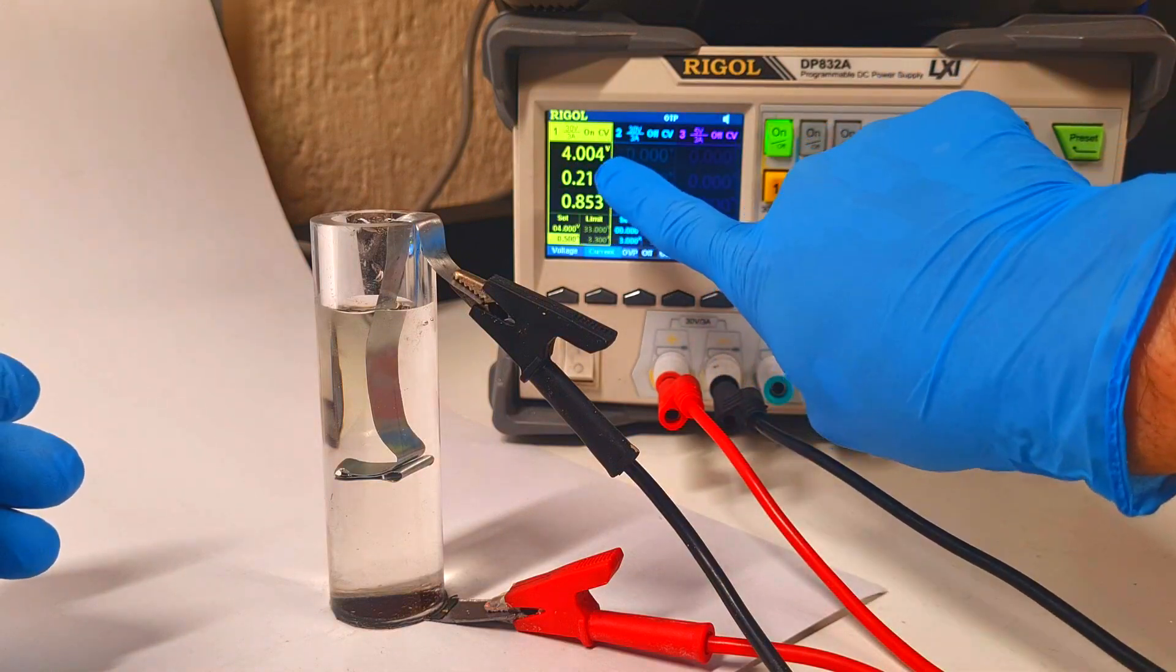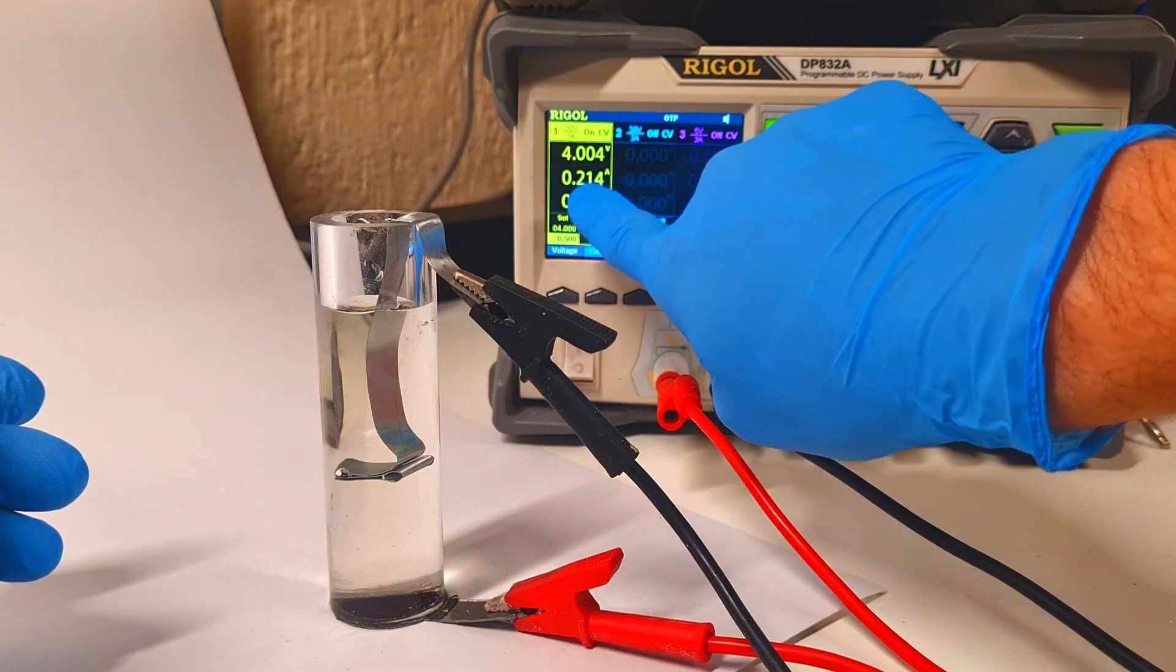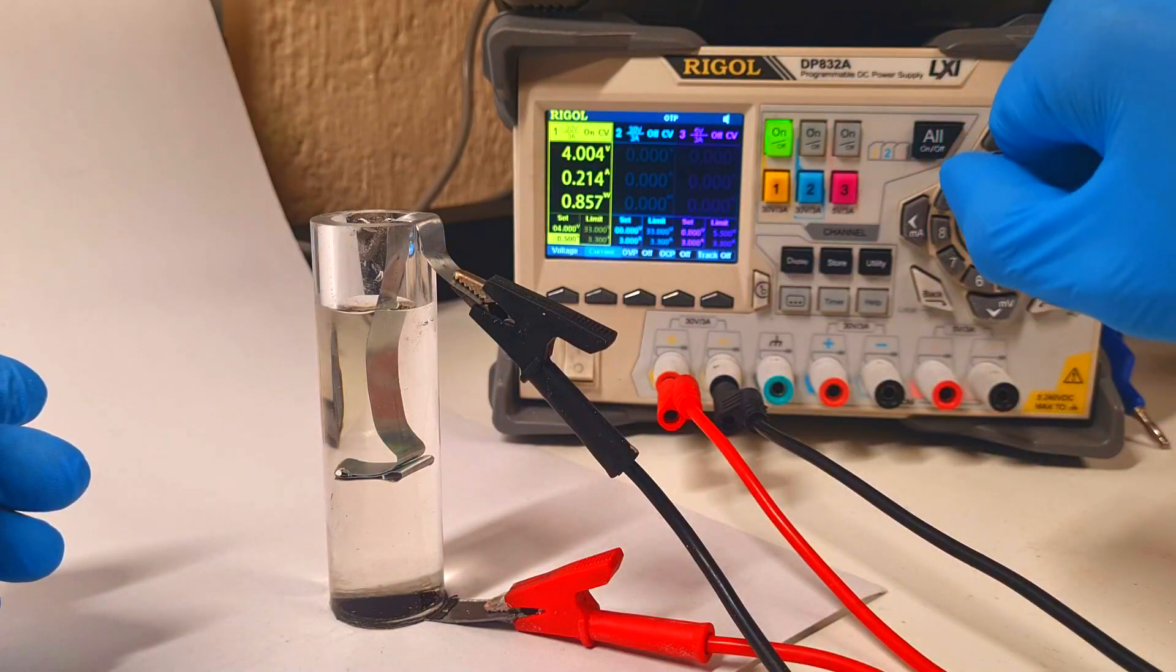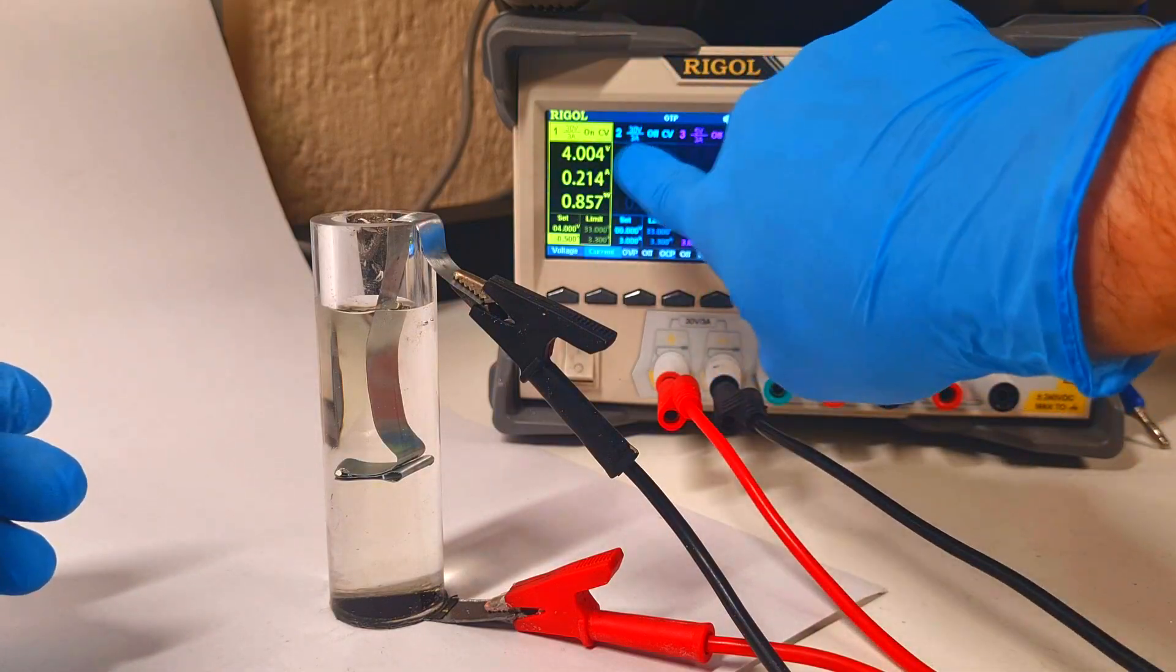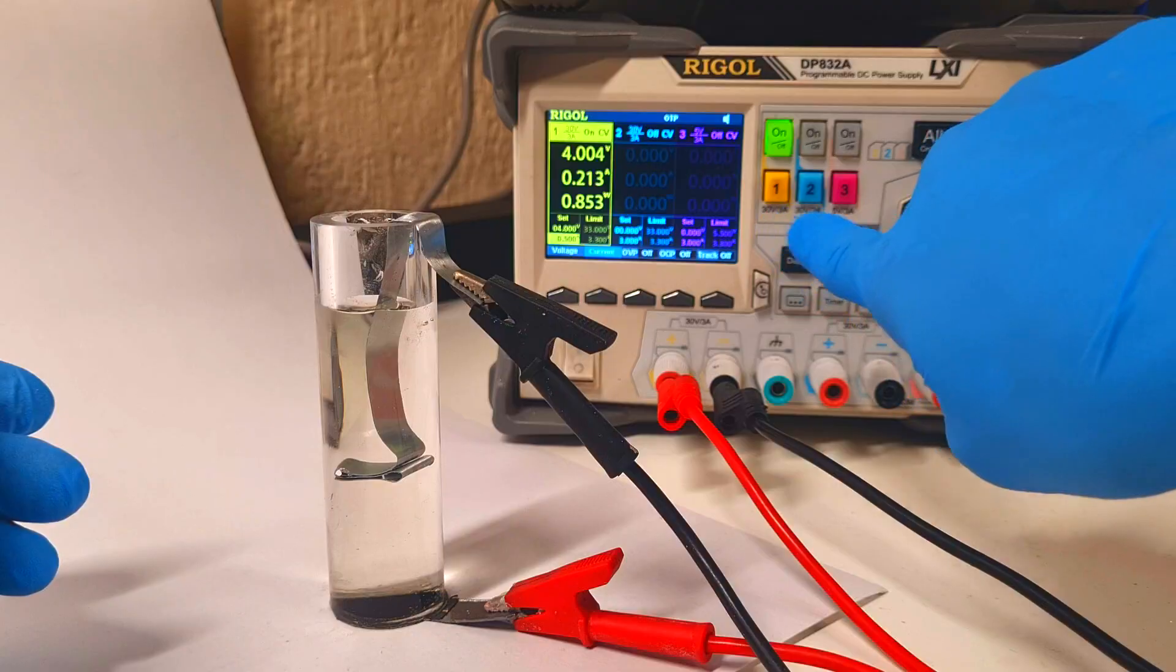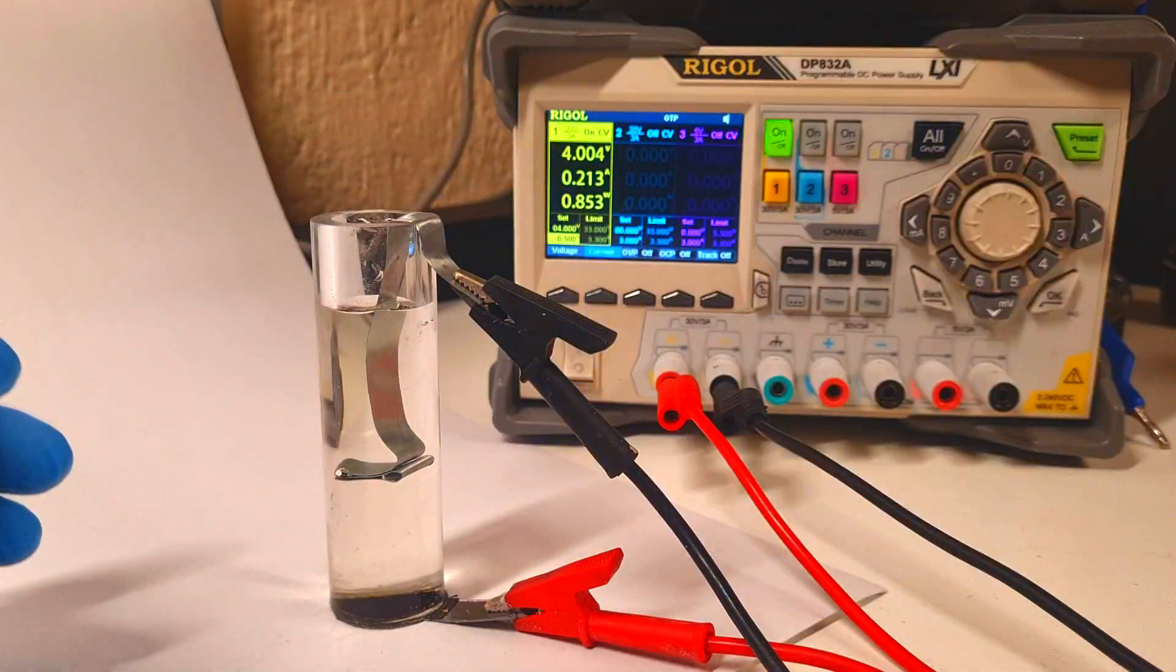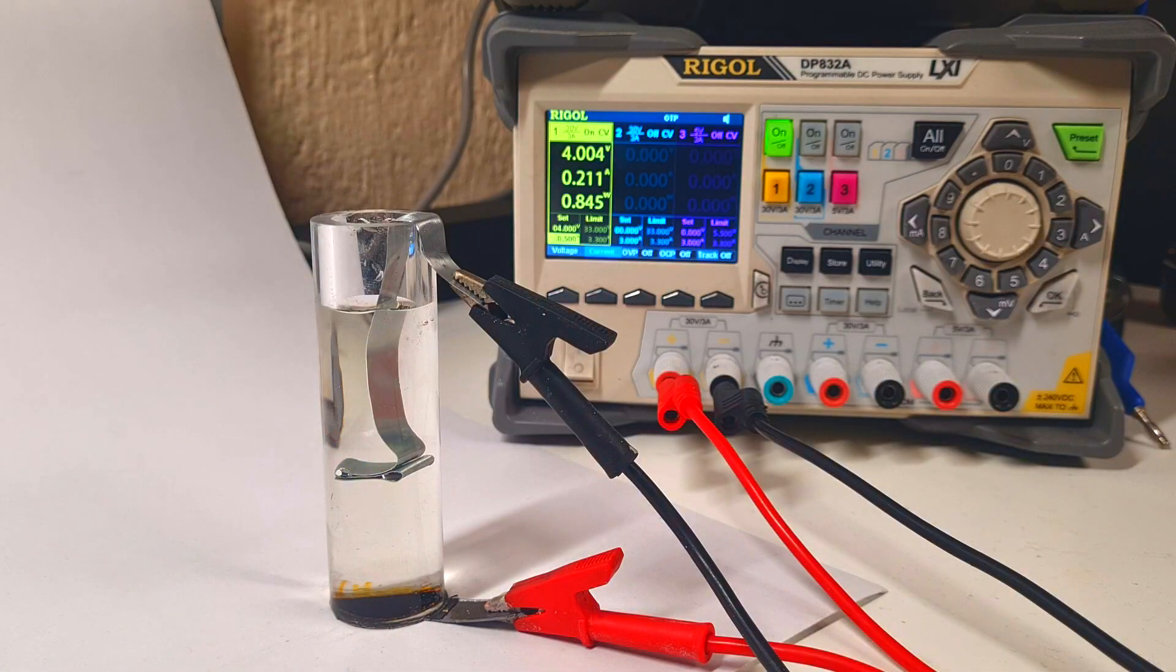4 volts is actually enough because in this case I charge the cell with 214 milliamps. So yeah I will leave the charging voltage of 4 volts and then I will see what I will get. I will also make a close look of the charging cell.